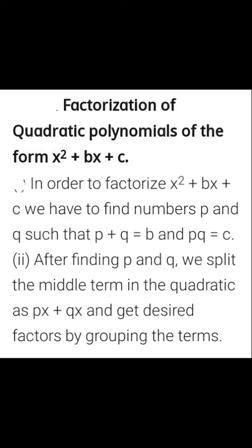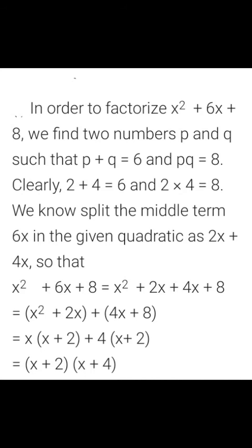In class 9, focus on factorization of polynomial ax² + bx + c using the splitting method. For example, x² + 6x + 8: here the coefficient of x² is 1, so find p and q such that p+q = 6 and p×q = 8. That gives 2 and 4. Then rewrite as x² + 2x + 4x + 8, take common from pairs, giving (x+2)(x+4).